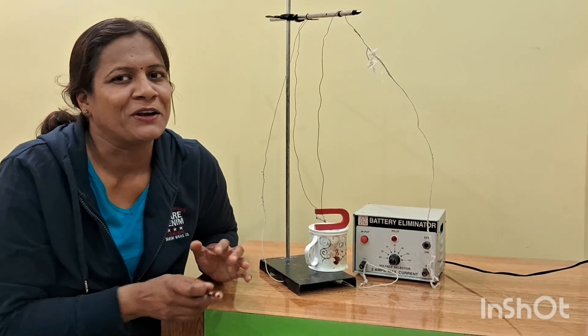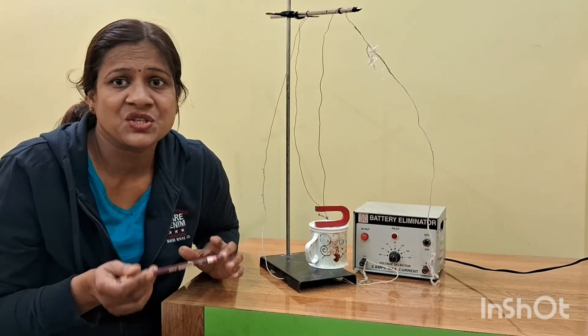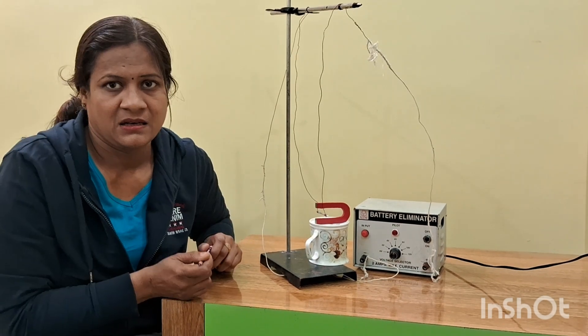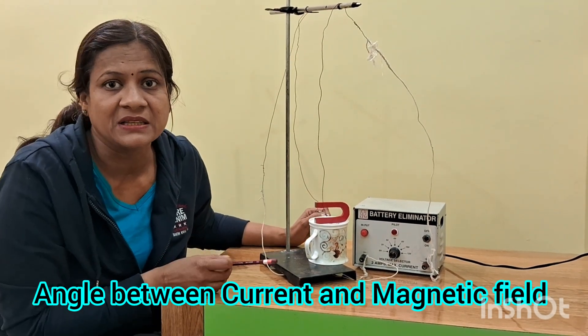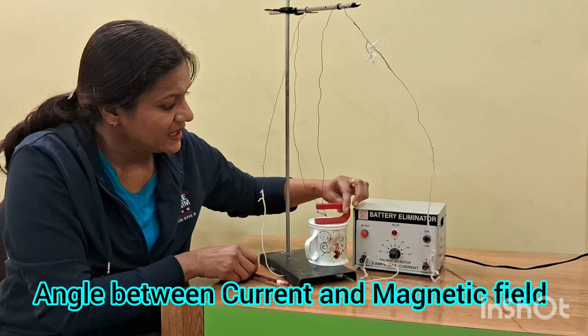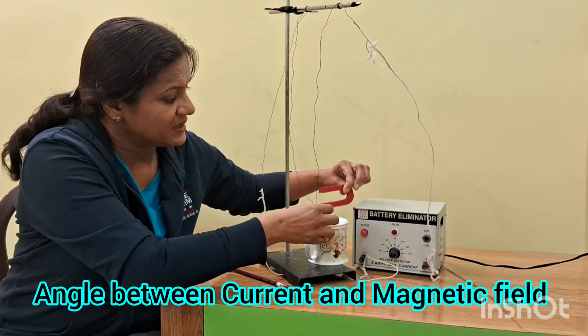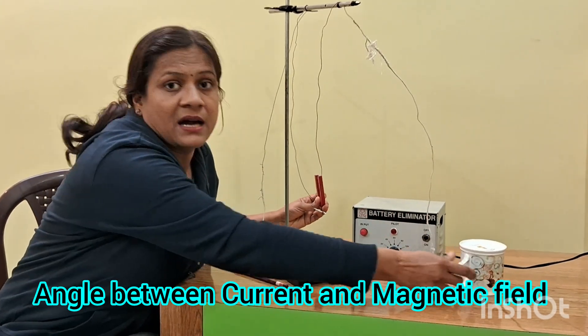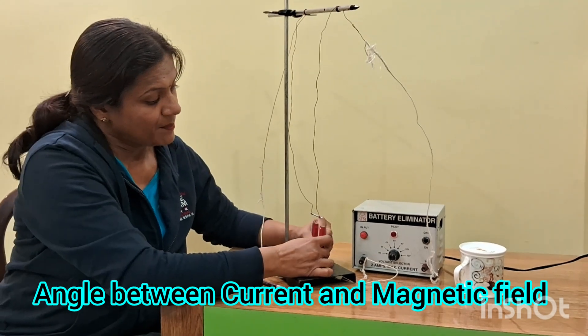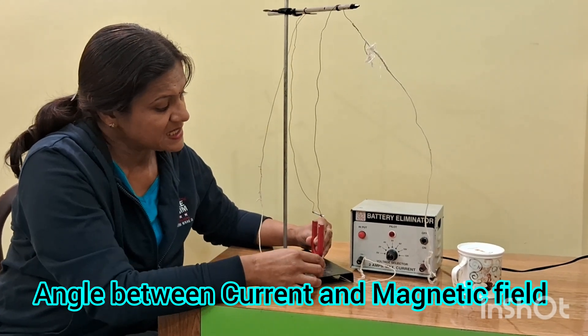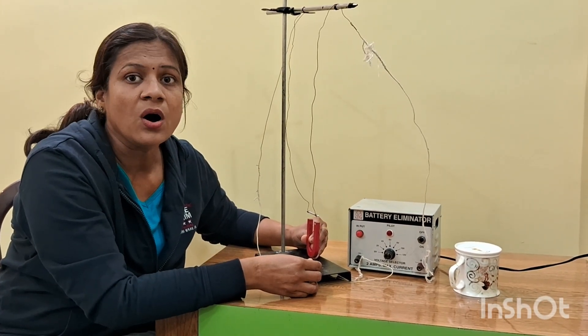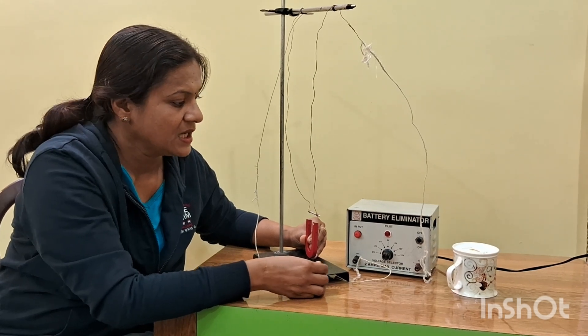It depends upon one more thing, and that is the angle which this magnet is making with the wire. Like if I take out this here, now this magnet is placed such a way that it is along the current carrying conductor. It's not perpendicular.